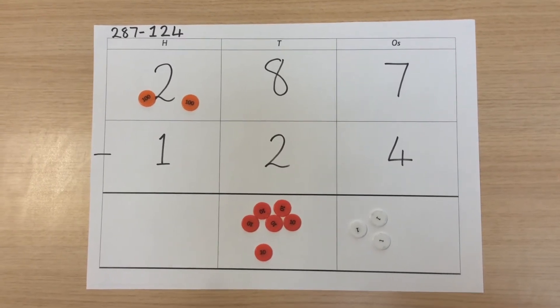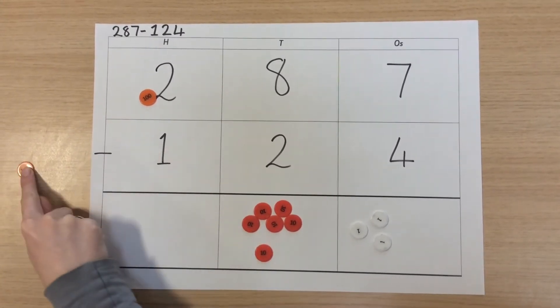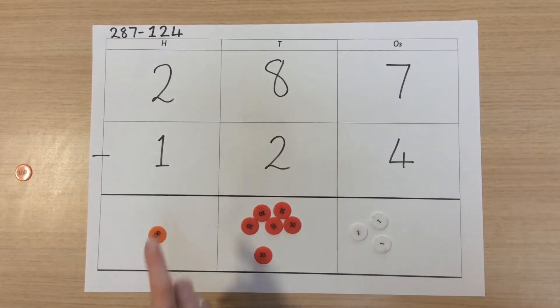We then finish this in our hundreds column by checking, subtracting, and moving what is left to our answer box.